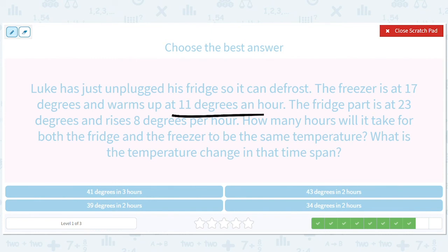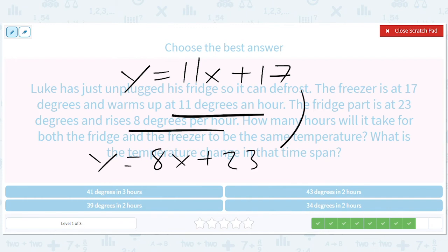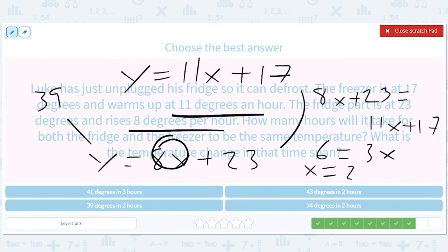11 degrees per hour. Y equals 11X plus 17. Look for the per hour. 8 degrees per hour. Y equals 8X plus 23. Set them equal. 8X plus 23 equals 11X plus 17. Subtract the 8X. You get 6 equals 3X. X equals 2. That's 16 plus 23 is 39. So you have 39 and 2.